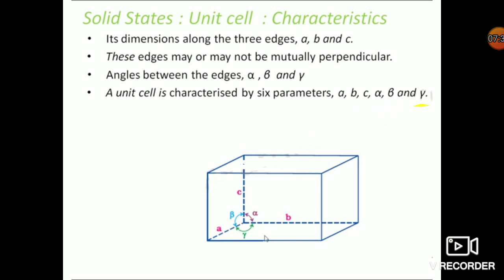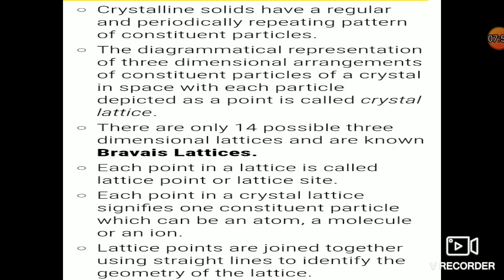If you change the values of the parameters alpha, beta, gamma, a, b, c, you will get seven types of crystal systems. So there are seven unit cell systems, but when you consider those seven systems and make arrangements, you get 14 Bravais lattices. The Bravais lattice is the complete scenario, and the smaller part is your unit cell. Each point in a lattice is called a lattice point or lattice site, and each point in a crystal lattice signifies the constituent particle — which can be atoms, molecules, or ions.